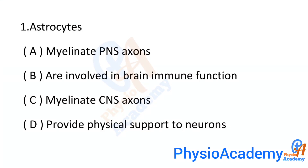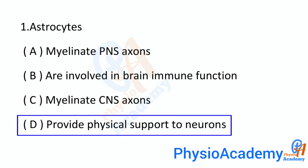Option A: myelinate PNS axons. Option B: are involved in brain immune function. Option C: myelinate CNS axons. Option D: provide physical support to neurons. The correct answer is option D: provide physical support to neurons.